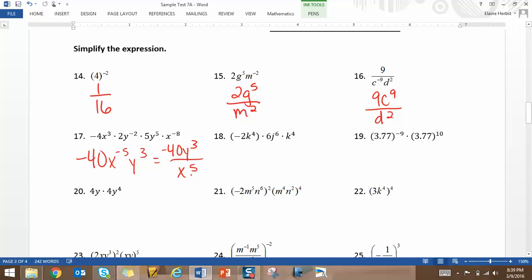Number 18. We have negative 12k to the eighth, j to the sixth. You can have the j first and then the k. As long as your exponents are correct.